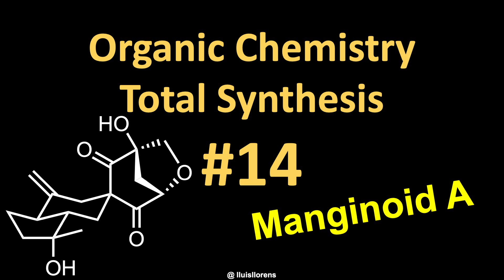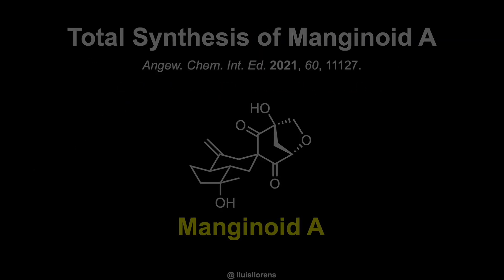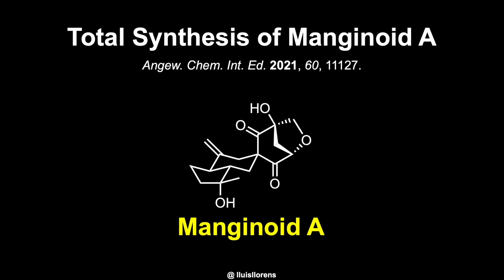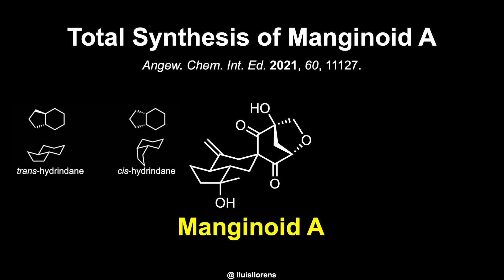Hello everyone! In this video I'm going to talk about the synthesis of Manganoid A, a terpenoid that belongs to a family of bioactive natural products whose structures fuse an oxabridge spirocyclohexenedione with a transhedrindane core — a system that combines a 6-membered ring with a 5-membered ring.